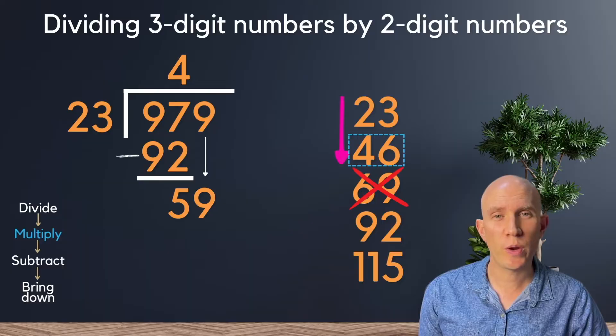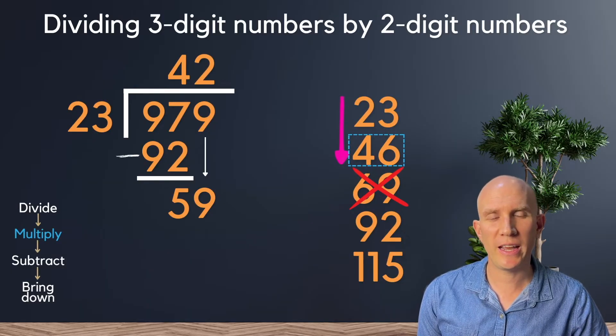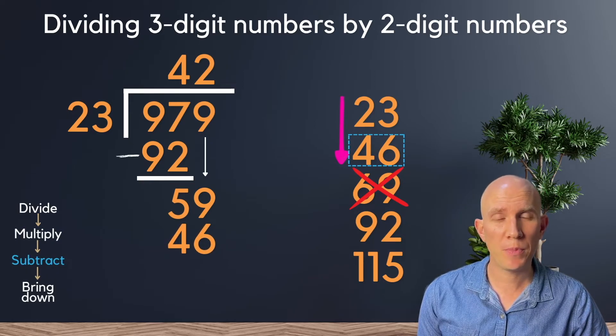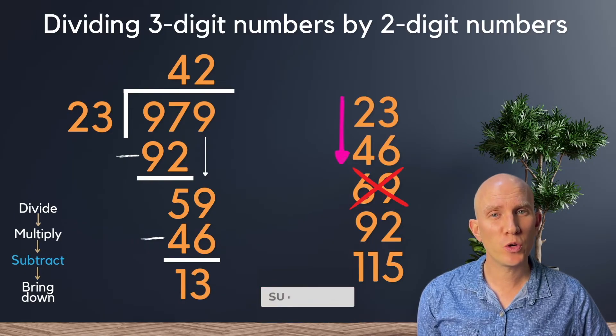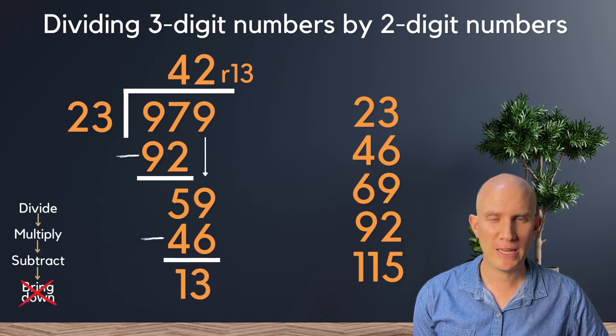Here we'll see that 23 can go into 59 twice. And two times 23 is 46. After that, we'll do our taking away, resulting in 13. And because there are no more digits, we can leave it there and just have a remainder of 13.